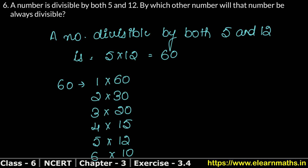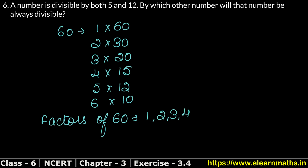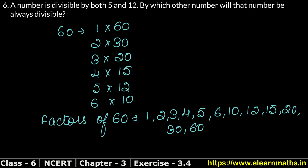So we can write the factors of 60. Factors of 60 are: 1, 2, 3, 4, 5, 6, 10, 12, 15, 20, 30, and itself 60. So the number is divisible by all these factors of 60.